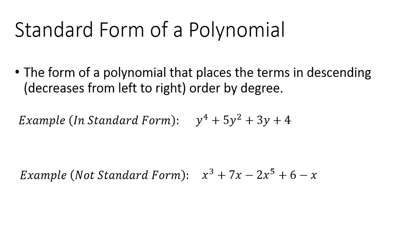Next we're going to look at the standard form of a polynomial. Standard form places the terms in descending order by degree from left to right. In the first example, y to the fourth has degree 4, 5y squared has degree 2, 3y has degree 1, and 4 has degree 0 — the degrees decrease from left to right, so this polynomial is in standard form.